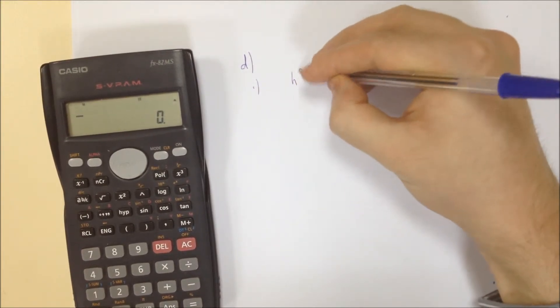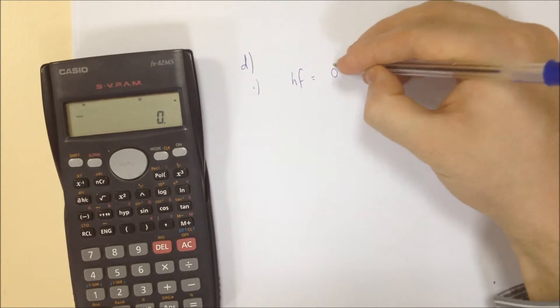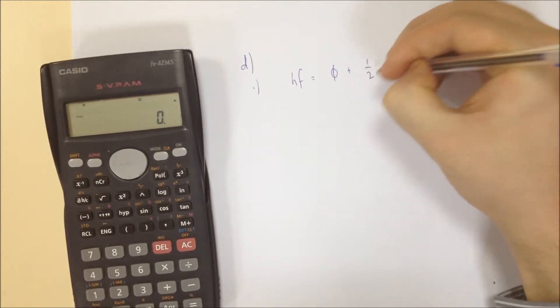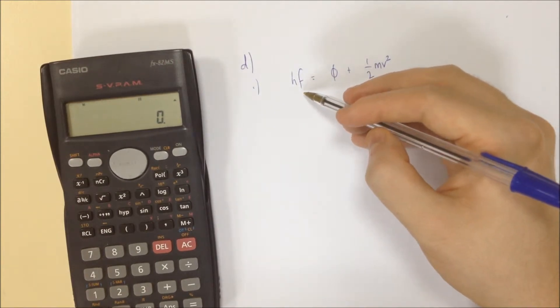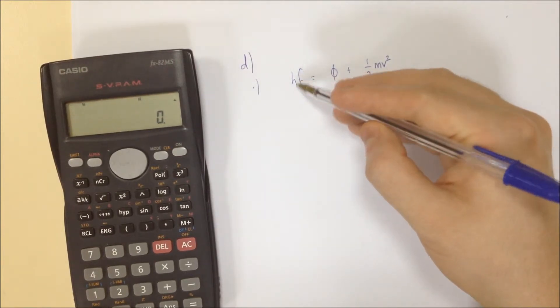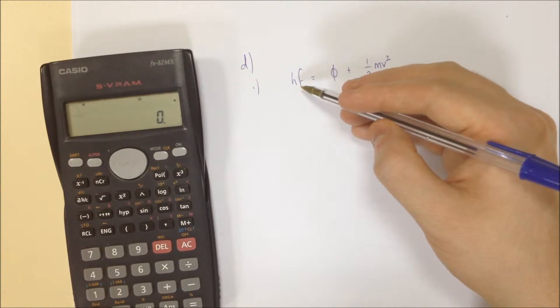The equation we're going to use is HF equals phi plus half mv squared. Now we're not going to use HF. We use HC over lambda because we're given lambda in this question. We calculated that in the last part. We know it's 4.06 times 10 to the minus 19.